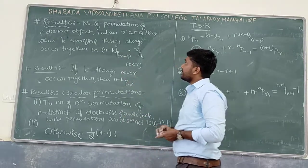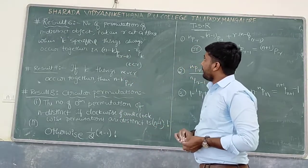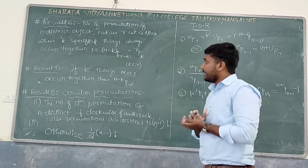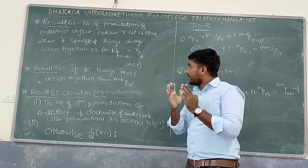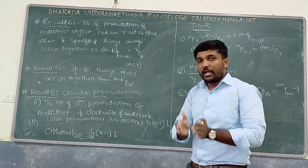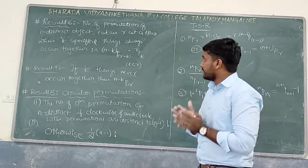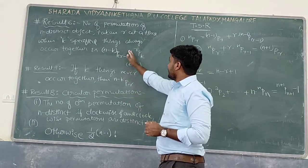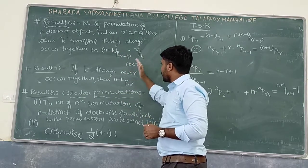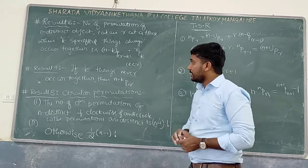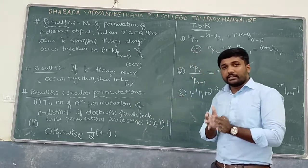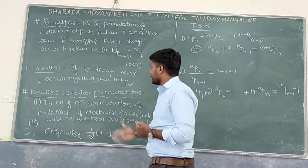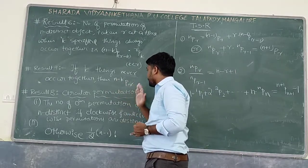Result 6: Number of permutations of n distinct objects taken r at a time, when k specified things always occur together, is given by (n−k)P(r−k) × rPk, provided k < r. If k specified things never occur together, then the permutation is (n−k)Pr.